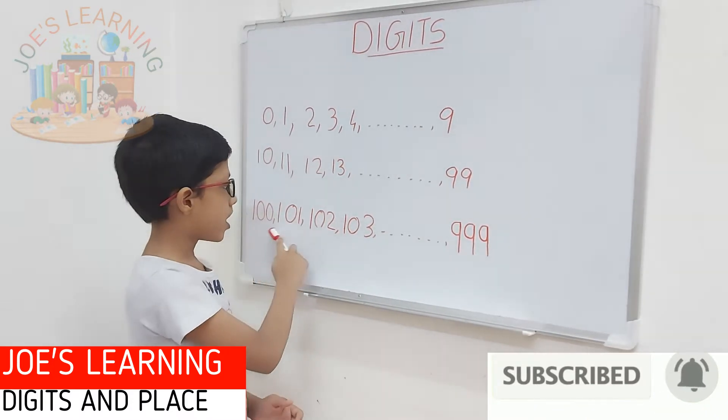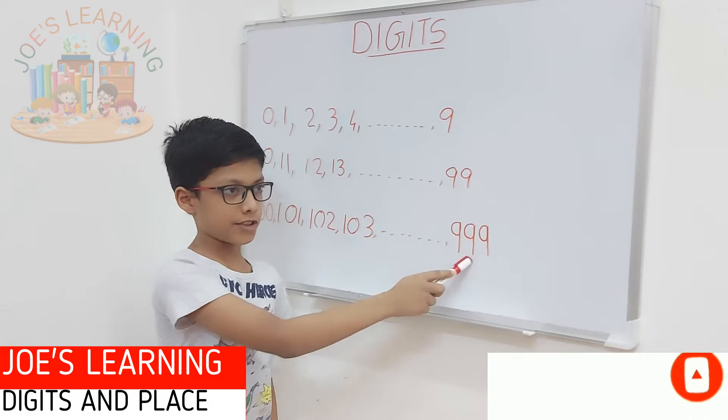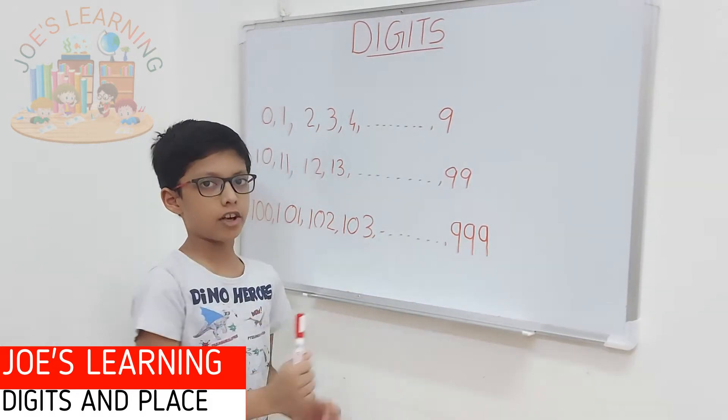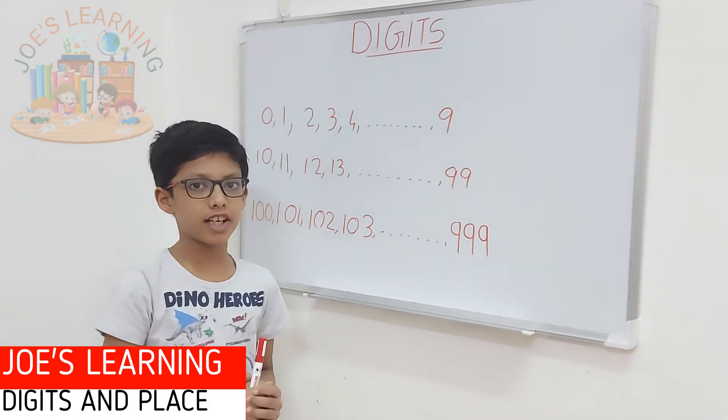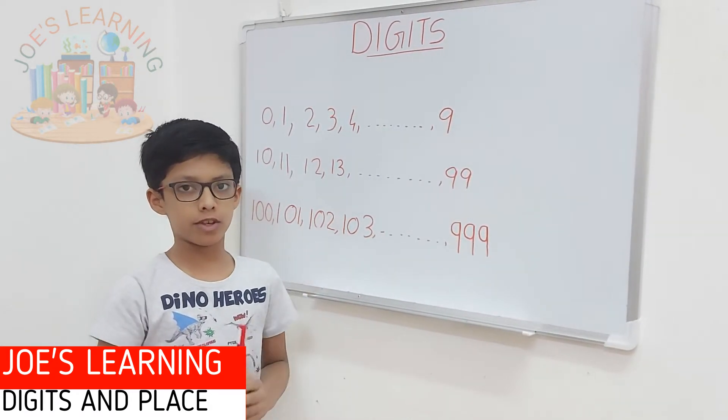100, 101, 102, 103, up till 999 are called three digit numbers.